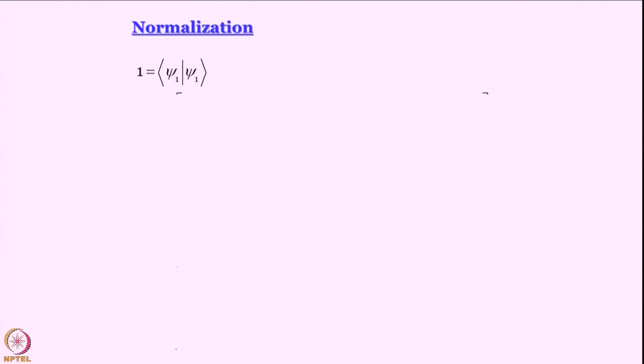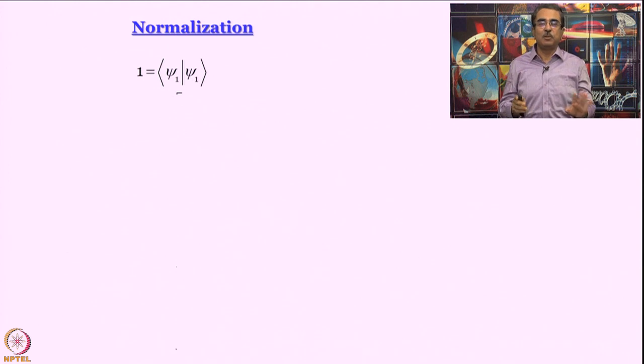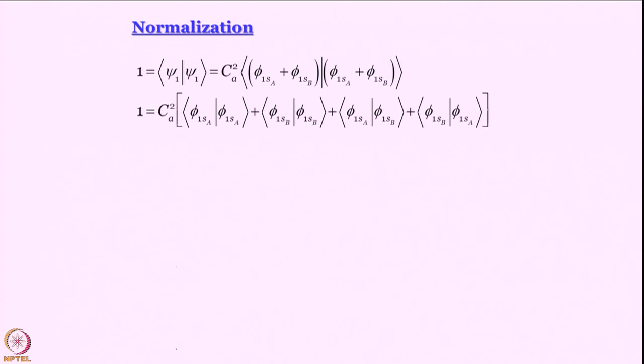Now, let us try to do our favorite exercise. Let us try to normalize. And here, I want you to do the normalization yourself. I am sure at this point, you will be able to do it. Please stop the video, maybe after the next one. This is what you want to get. Stop the video, do the normalization yourself. This is what you get. C_s² multiplied by integral 1s_a² + integral 1s_b² + integral 1s_a 1s_b + integral 1s_b 1s_a. These as we know are 1 because the s orbitals are individually normalized.